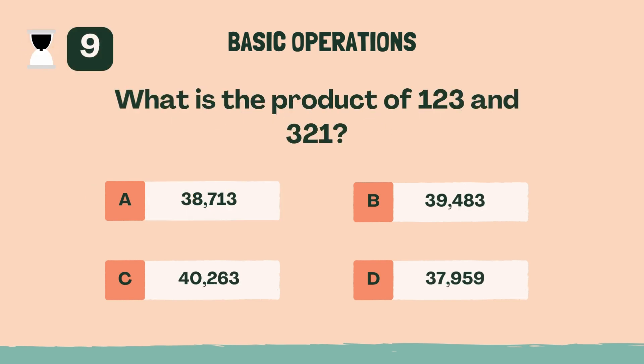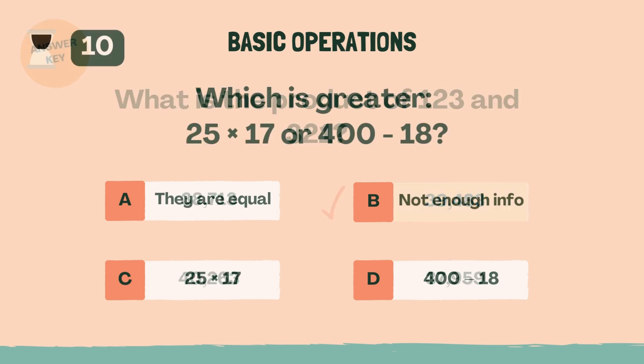What is the product of 100, 23, and 321? B, 39,483.